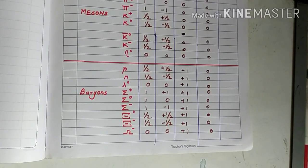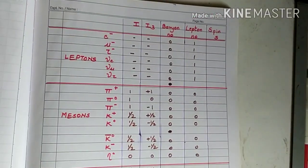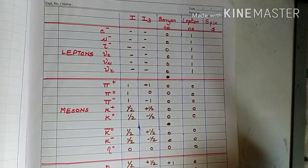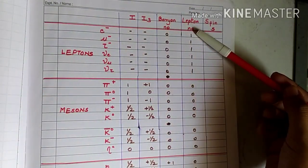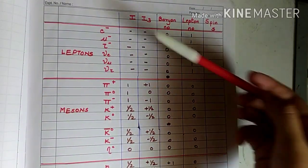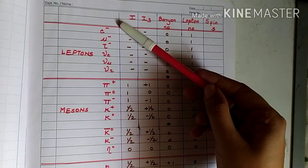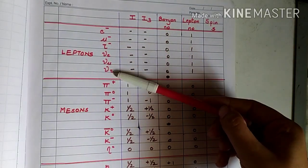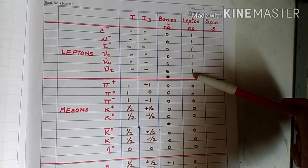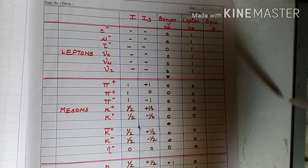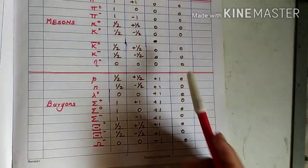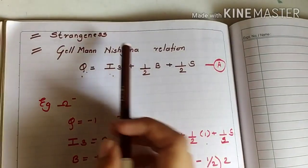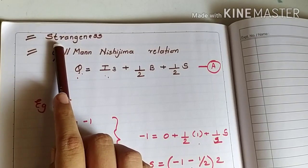The next quantum number we'll understand is lepton number. As the name suggests, similar to baryon number for baryons, only leptons would have lepton number equal to positive one. So all the leptons — that is electron, muon, tauon, and neutrinos — would have lepton number plus one. On the other hand, the lepton number for mesons and baryons would be zero.